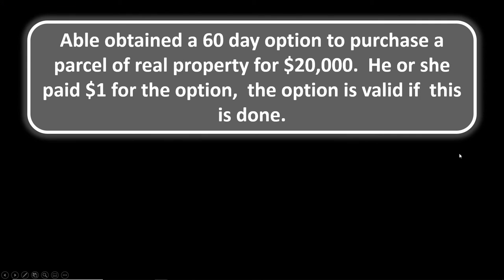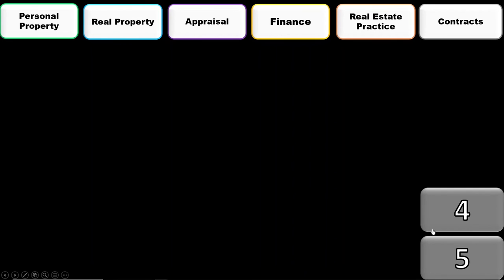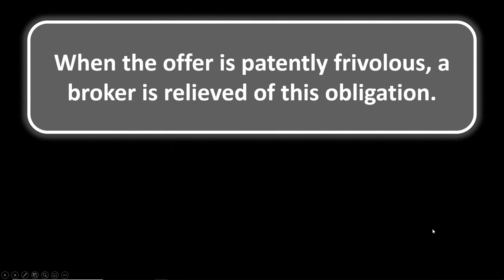Contracts number three: Able obtained a 60-day option to purchase a parcel of real property for $20,000 and paid one dollar for the option. The option is valid if the one dollar was actually delivered. Even though this may seem trivial in real-world terms, by legal theory the option is valid as long as that one dollar was actually delivered.